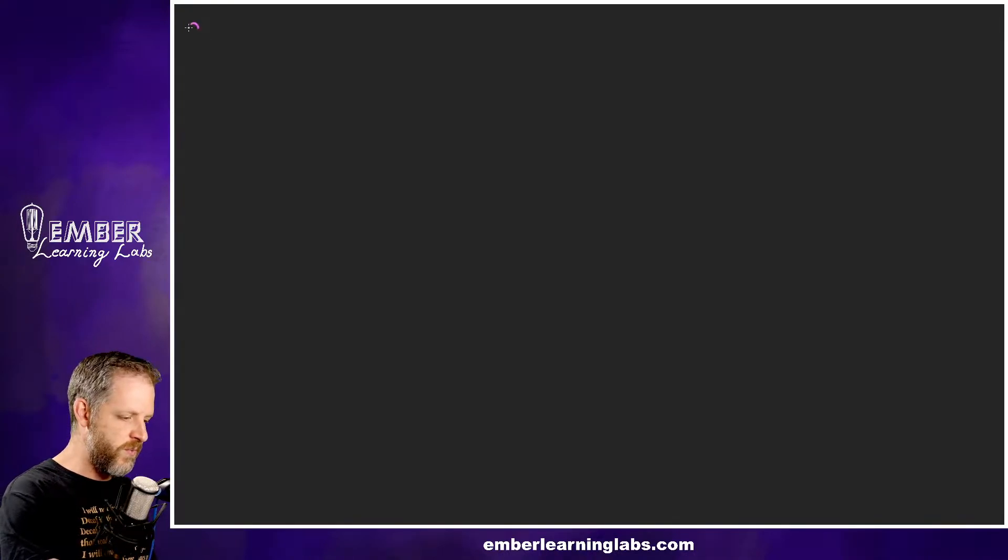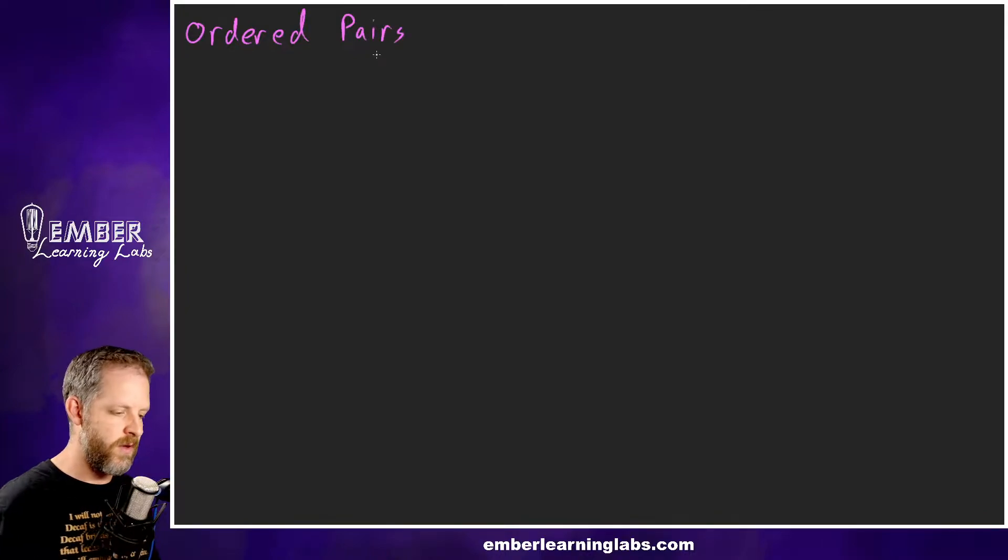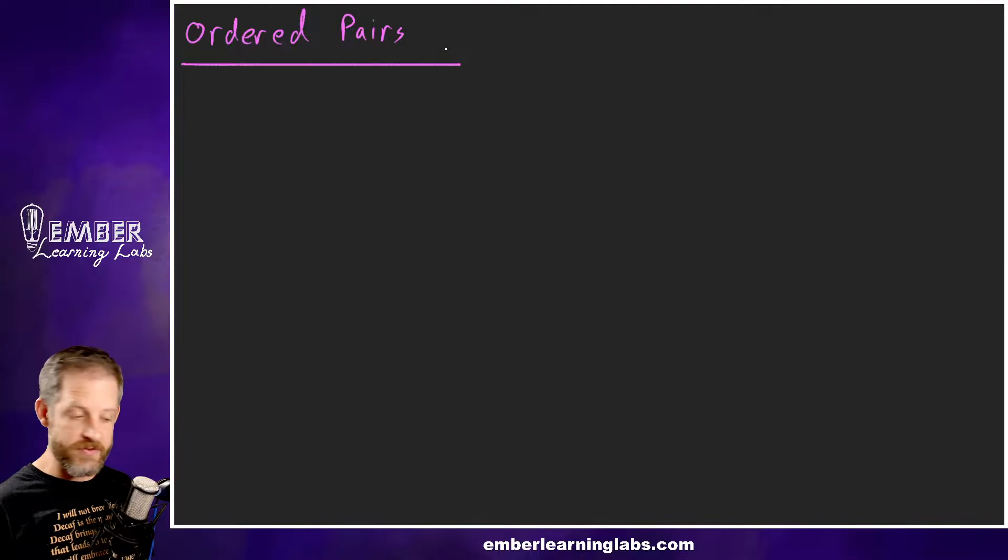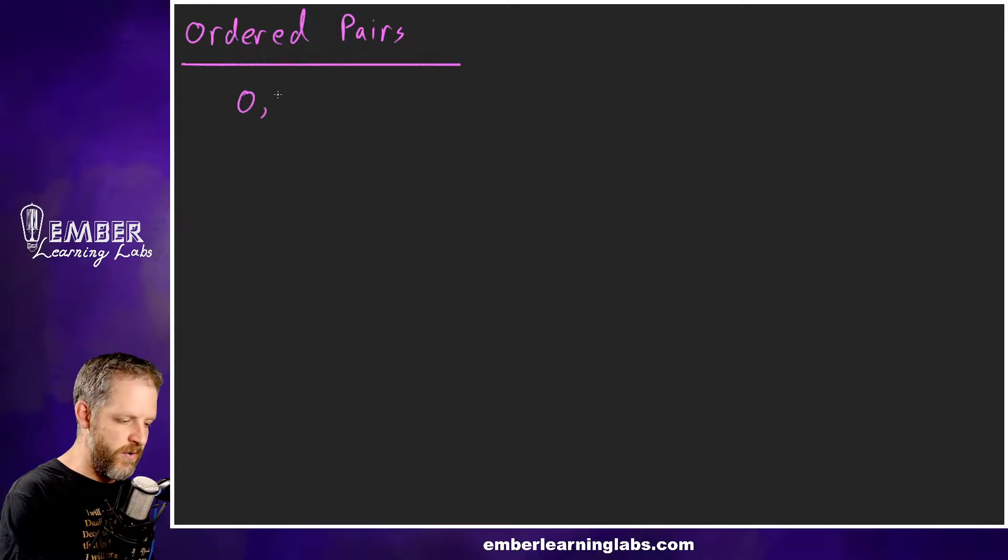There are a few different ways to represent a function. One way to represent a function is with ordered pairs. So you could have something like (0,5), (-2,8), and (6,24).